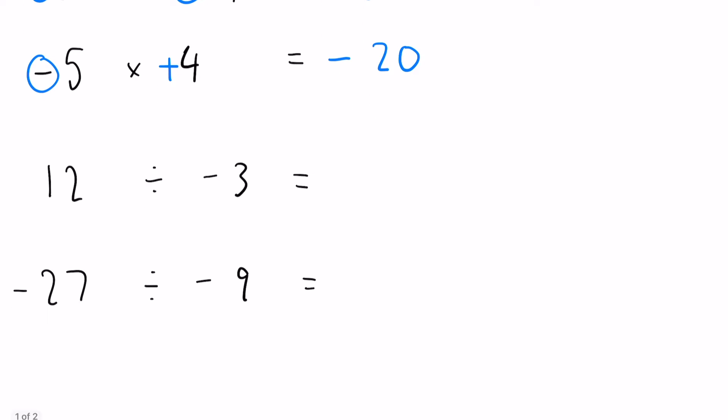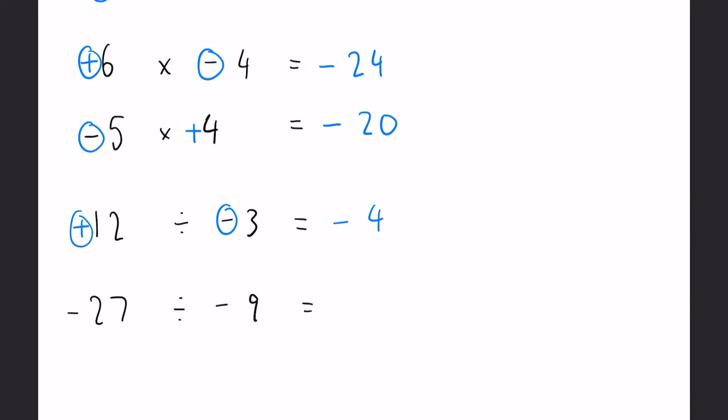Okay now for the division the same rules apply, we just divide instead of times at the end. So positive and a negative, our answer is going to be negative. 12 divided by 3 is just 4.